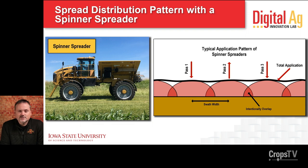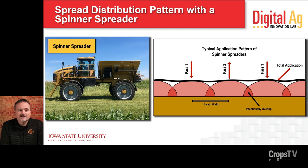Spinner spreaders use rotary motion to essentially throw particles — distribute those particles out away from the center line of the machine — and they don't spread evenly. You get more distribution near the back of the machine than at the very far edges. To even out the spinner spreader application, we require that the spreader will overlap so that the edges of each pass add up onto themselves and hopefully create an even pattern. Spinner spreaders are generally viewed as low maintenance, low cost, high throughput machines.